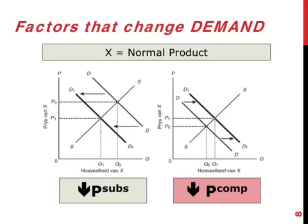The opposite happens when the price of substitutes or complements decreases. Let's think about hamburgers and pizza. If pizza suddenly becomes much cheaper, you will be eating much more pizza. The demand curve for hamburgers will move towards the left, since your demand for hamburgers decreases at every price. The equilibrium price and equilibrium quantity for hamburgers are both lower.